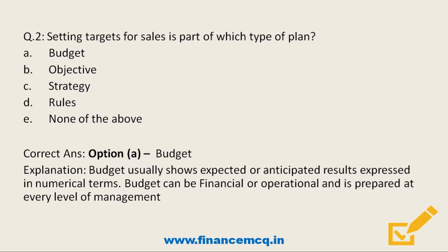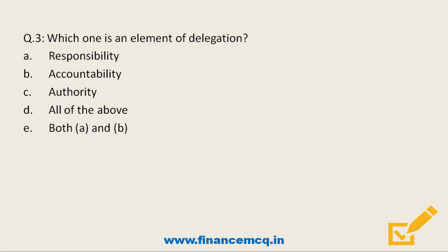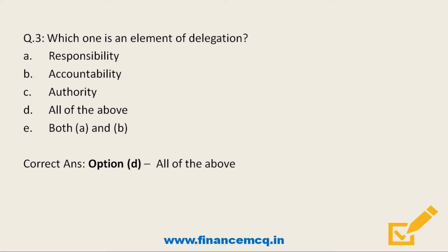Next question: which one is an element of delegation? Option A: responsibility. Option B: accountability. Option C: authority. Option D: all of the above. The correct answer is all of the above. Delegation takes place when one person gives another the right to perform work on his behalf. A manager delegating work must entrust responsibility to the subordinate, impart necessary authority to perform the work freely, and create a system of accountability to ensure the work meets the desired standard.